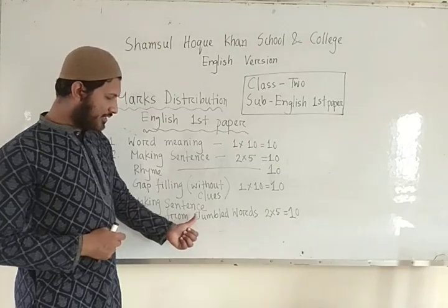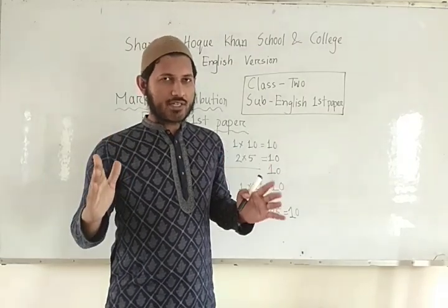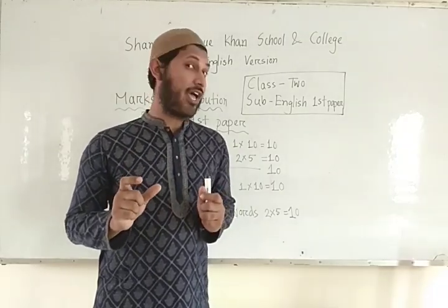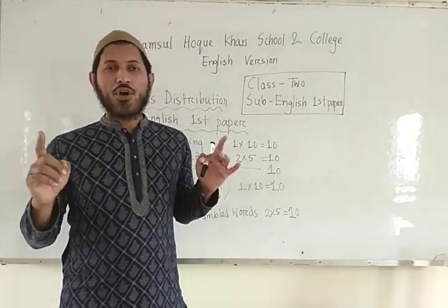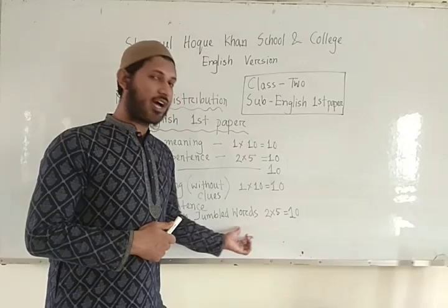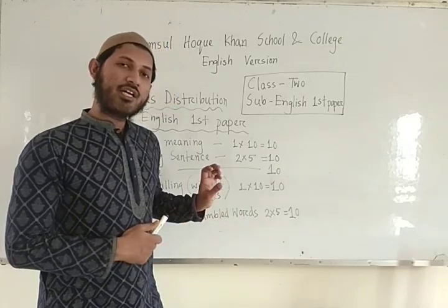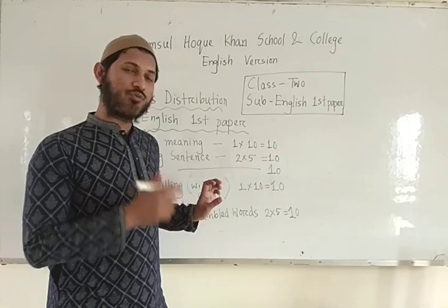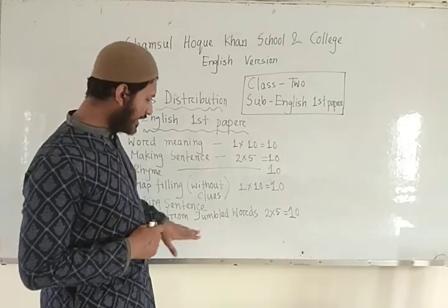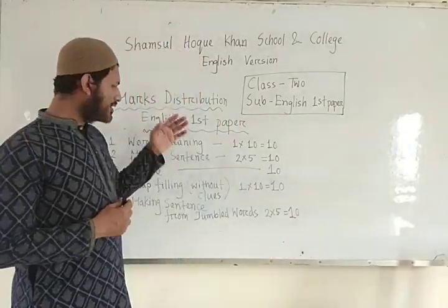Now question 5 is making sentences from jumbled words. Here one sentence is given and the words are not properly arranged in sequence, so you have to arrange the words in the correct sequence and write the full sentence. Make it grammatically correct with a full stop or question mark where needed — that is, make a proper sentence from the jumbled words. Each sentence contains 2 marks, so for 5 sentences in total you will get 10 marks.